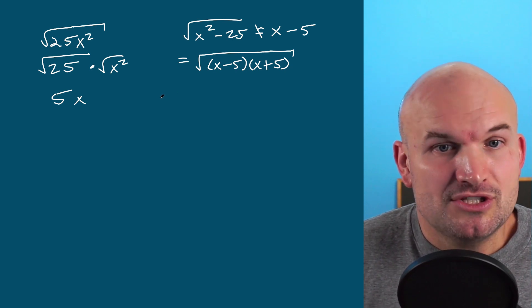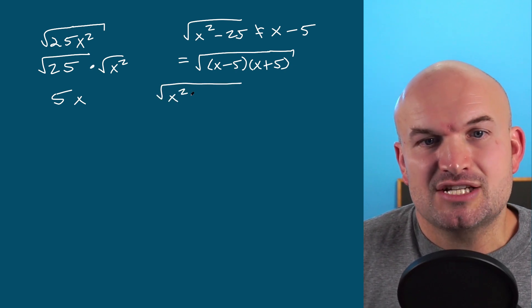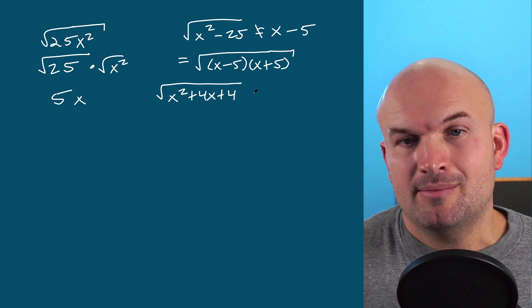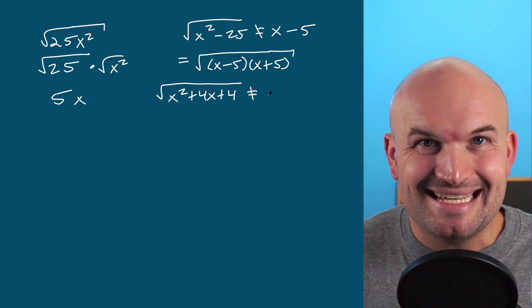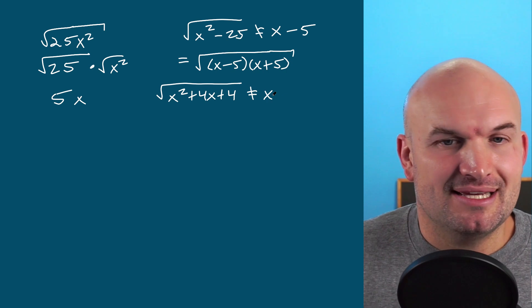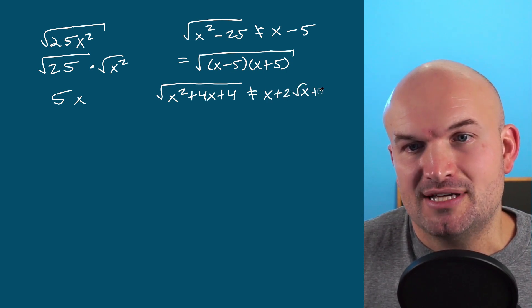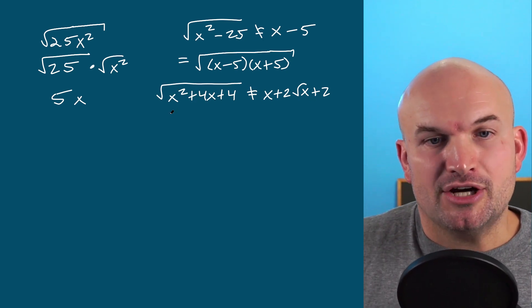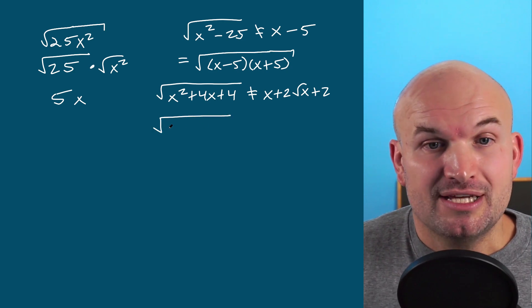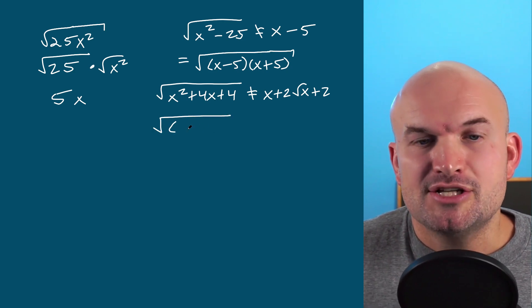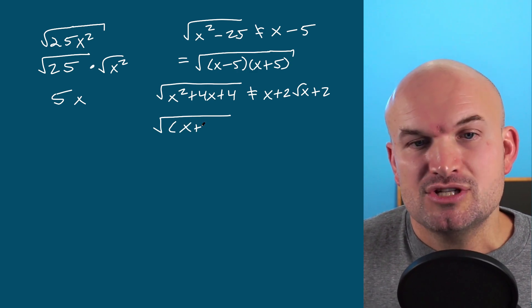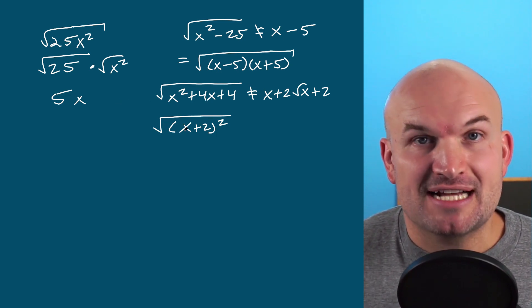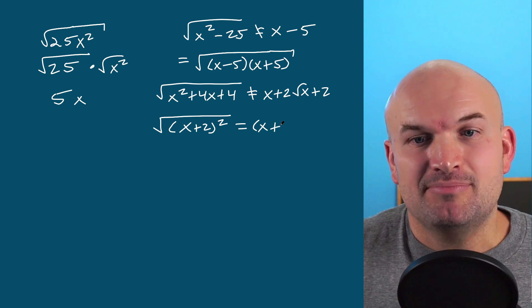Another example students use is a trinomial like x squared plus 4x plus 4. Students see the x squared and the 4, which is a perfect square number, and again they want to distribute the square root — which is not the correct answer. They might get something like x plus 2 times the square root of x plus 2. Please do not do this. The only thing you can do is factor what is under your radicand. In this example it actually works out well because this is a perfect square trinomial — it factors into x plus 2 quantity squared. Taking the square root of that just leaves x plus 2.